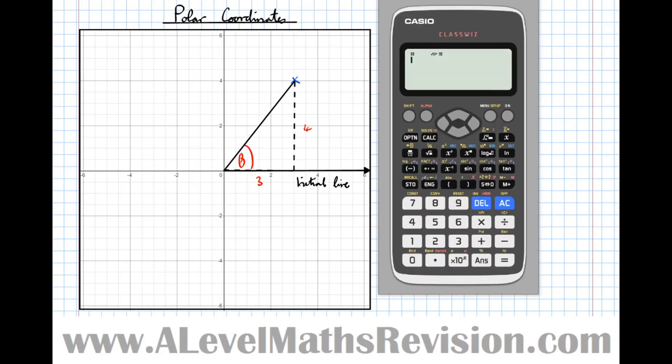We'll do this in radians as well as the angle unit. So arctan of 4 thirds, which is 0.927 radians.